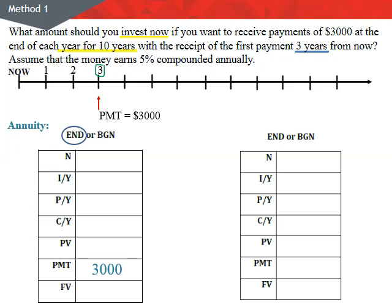Setting end mode makes it easy to find N. The payments are occurring for 10 years at the end of each year, so PY is 1 and N is 10, meaning there are 10 payments in total. Year three is the first payment, then second through tenth, with the tenth payment occurring in year 12. At that point, there is no future value — we have zero dollars left, so future value is zero. The interest rate is 5%, so IY is 5, and the compounding period is 1 because it is annually compounded.